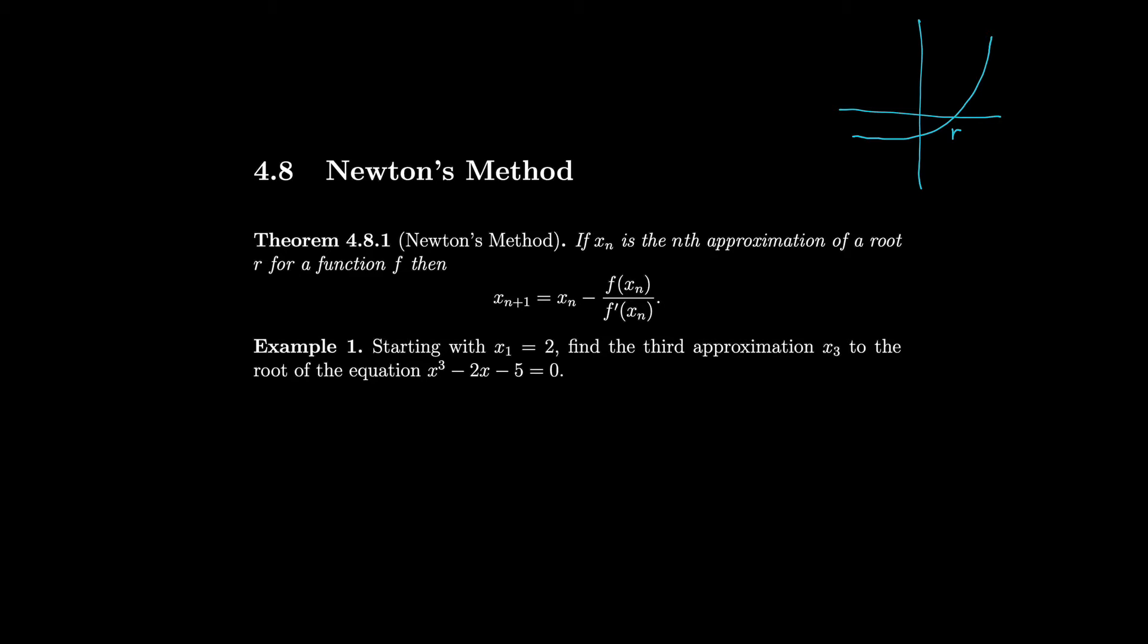If we take a nearby x value, let's call this x₁, then we can look at the y value. So this point is (x₁, f(x₁)) and I could draw the tangent line through that point. The tangent line will hit another x value on the bottom over here.